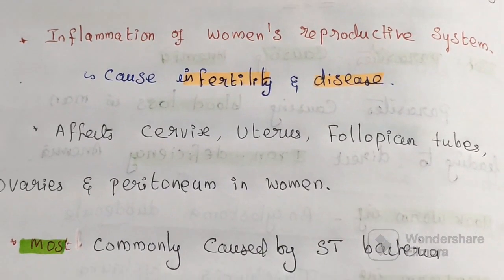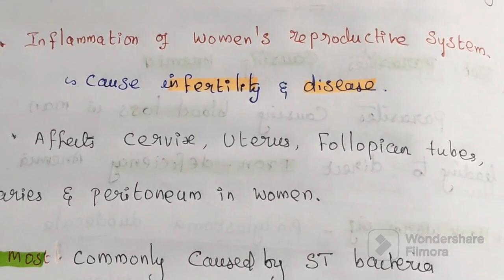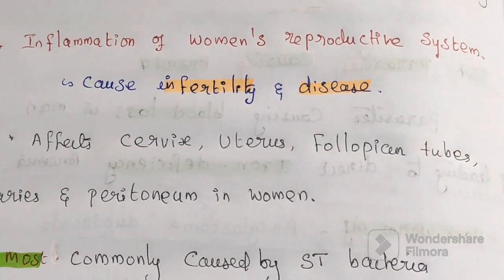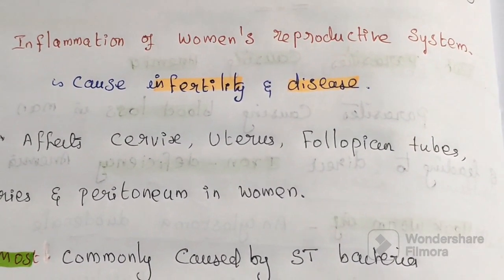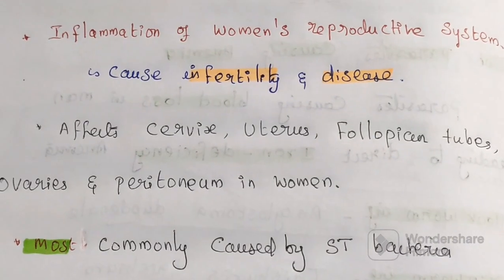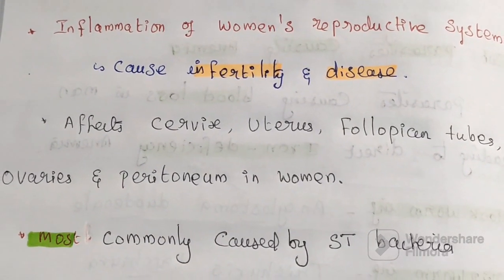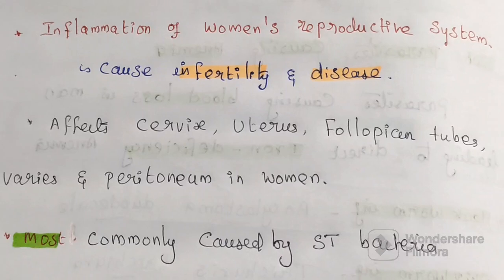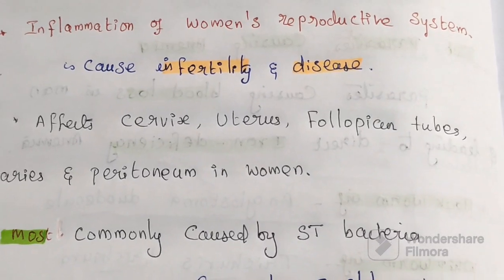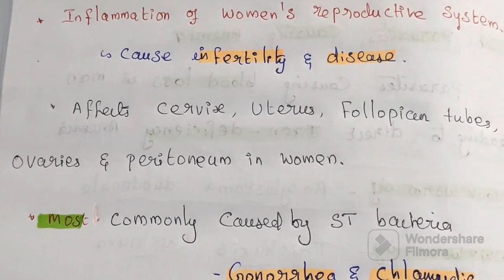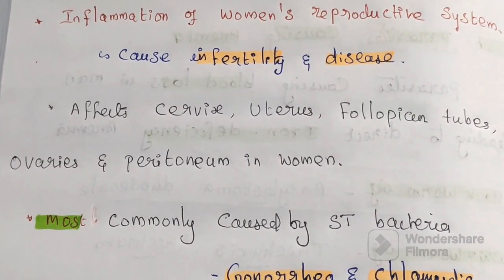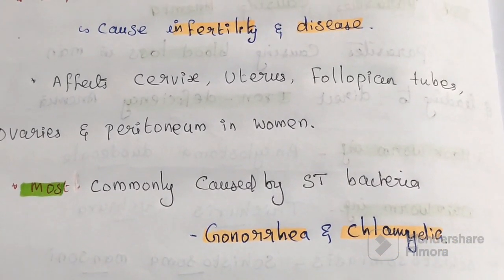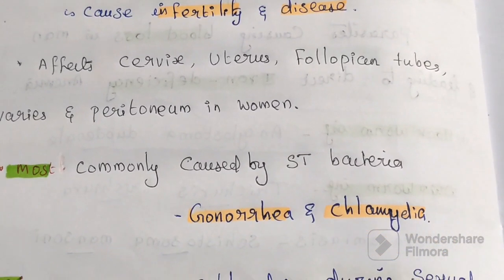It mainly affects the cervix, uterus, fallopian tube, ovaries, and peritoneum in women. It mainly causes infection in these reproductive organs. Most commonly it is caused by sexually transmitted bacteria.